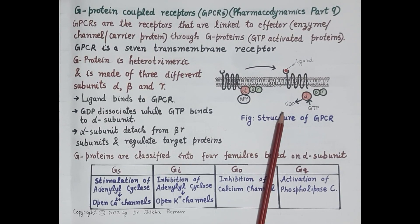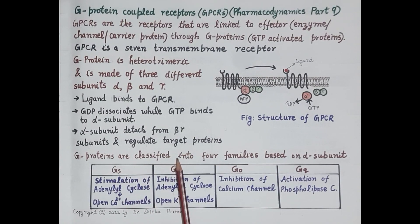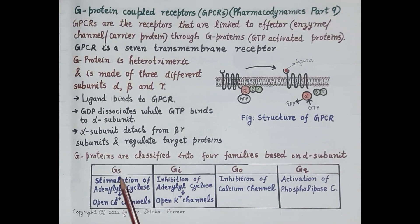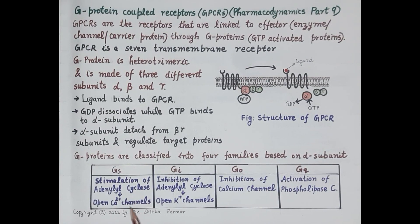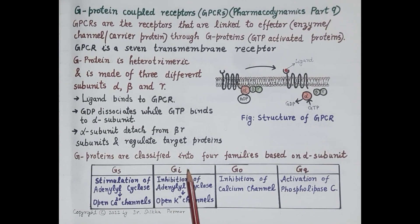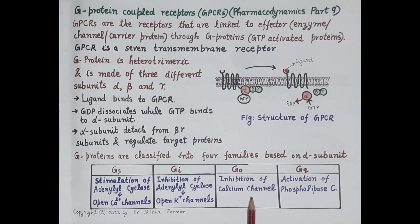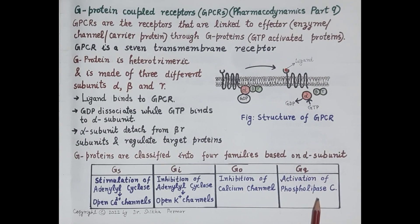G proteins are classified into four families based on their alpha subunit. First is Gs (G stimulatory protein), which induces stimulation of the enzyme adenyl cyclase and opens calcium channels. Second is Gi (G inhibitory protein), which inhibits adenyl cyclase and opens potassium channels. Third is Go, which inhibits calcium channels. Fourth is Gq, which activates the enzyme phospholipase C.